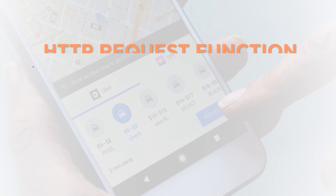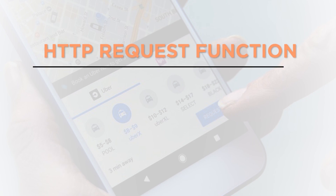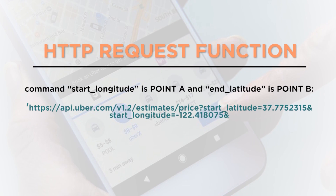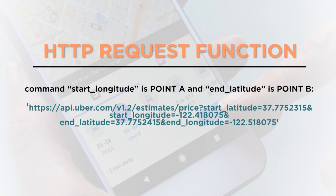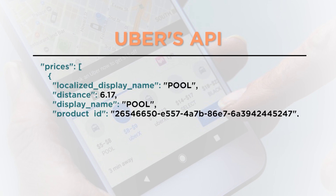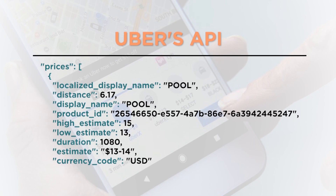Apple would send an HTTP request function in the API code to Uber where command start longitude is point A and end latitude is point B. Uber's API then sends the information back that Apple Maps requested, so Apple Maps can show the user how much an Uber Pool ride would cost.